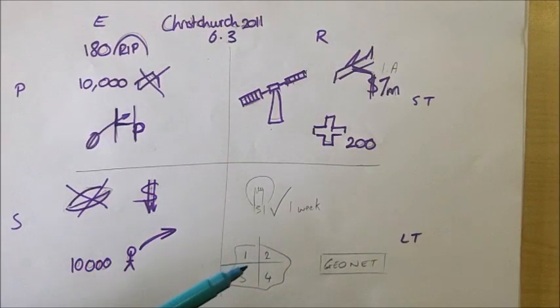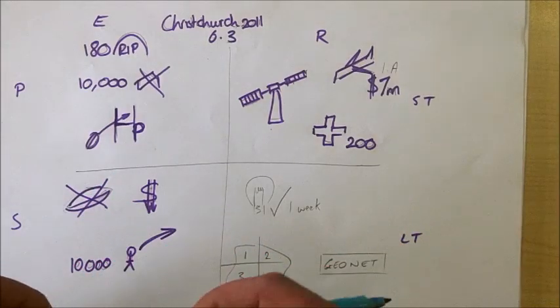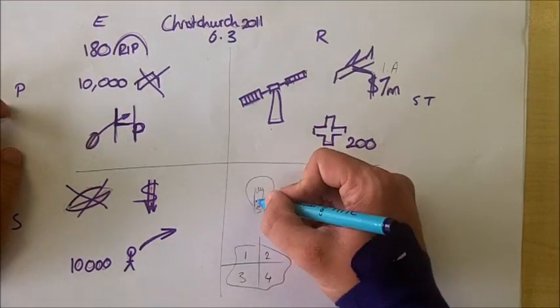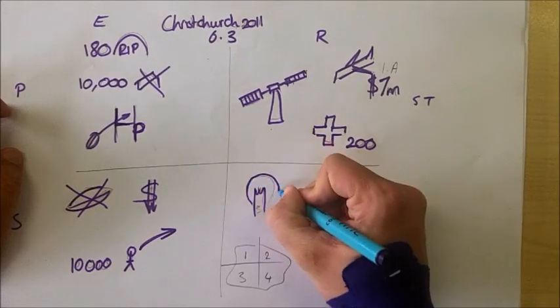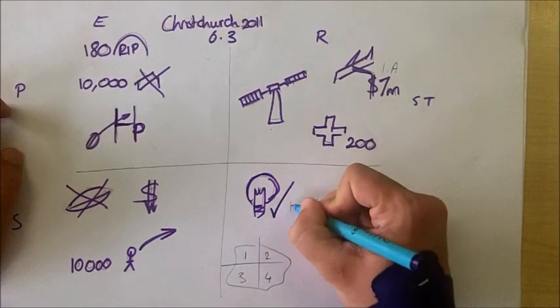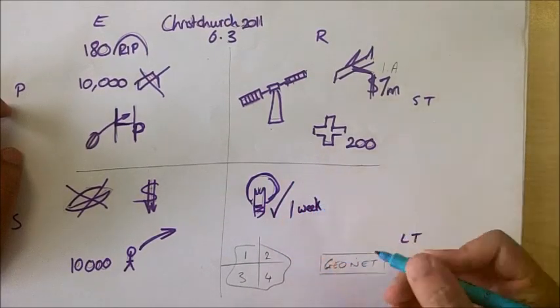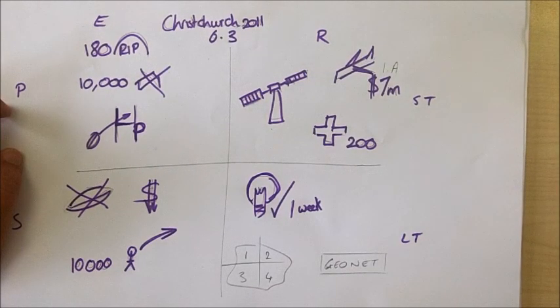If we move on to the long-term responses, again we can see how New Zealand as a rich country was able to quickly and effectively respond to the Christchurch earthquake. For example, despite electricity supplies being knocked out, they were up and running again within one week. This was also a similar kind of time period of things such as water pipes that had also been damaged were quickly repaired so that people had access to basic facilities.